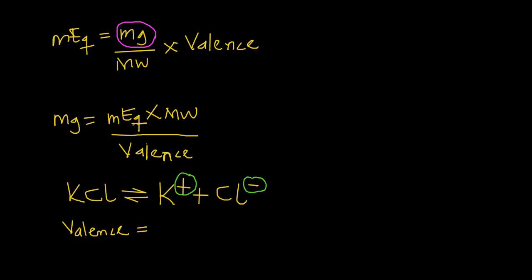So just keep note of that—valence for KCl is equal to one. So now we know everything and we can plug that into the equation. Milligrams is going to be equal to 30 times 75, all divided by the valence of one. And if you do the algebra, I believe you end up with 2250 milligrams.